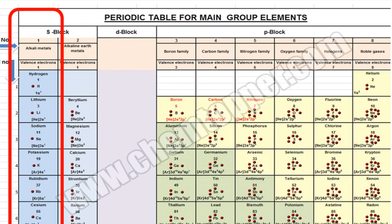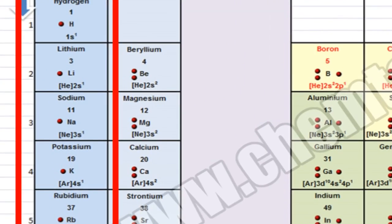This is the periodic table with the Lewis dot symbols of all main group elements. You can see that group one elements they all have only one dot in their Lewis dot representation.